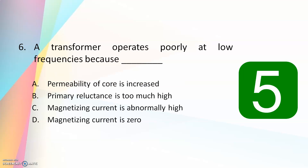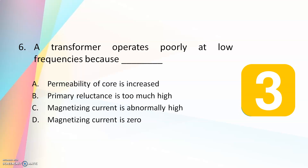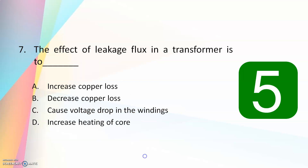Sixth question: a transformer operates poorly at low frequencies because — permeability of core is increased, primary reluctance is too high, magnetizing current is abnormally high, or magnetizing current is zero. The answer is magnetizing current is abnormally high. A high magnetizing current leads to poor operation of the transformer under low frequencies.